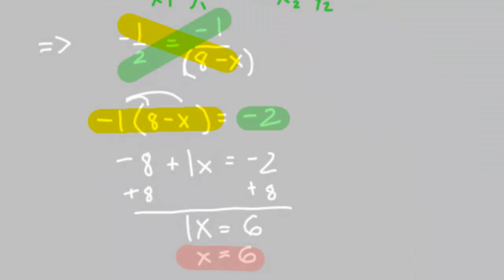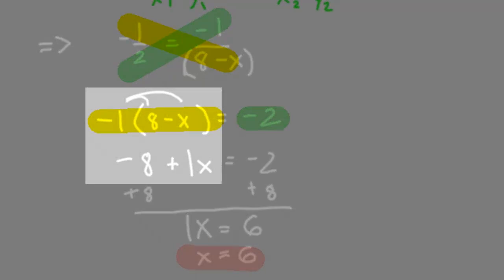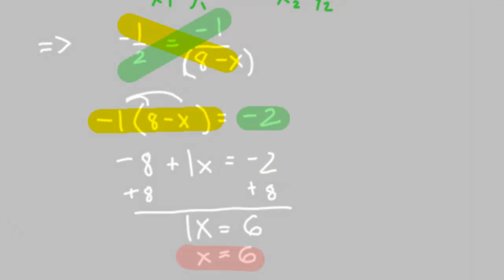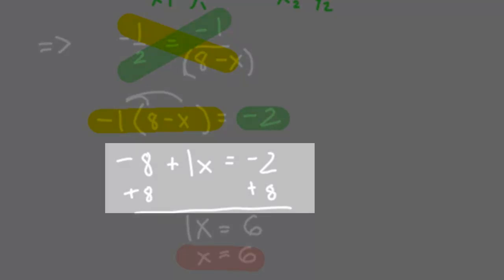Let's simplify more by using the distributive property. Negative 1 times 8 minus x simplifies to negative 8 plus 1x. Negative 2 we didn't touch, that just drops down. The final step is just to add 8 on both sides, and you get x equals 6.